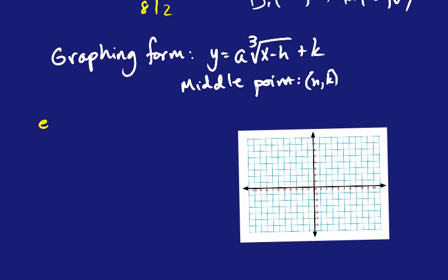Alright, so for this example, let's go with y equals the cube root of x plus 1, and then we'll go with minus 2. Alright, so the middle point is going to be negative 1, negative 2. We'll graph that. Negative 1, negative 2. And then what we want to do is we want to get the 4 other points.